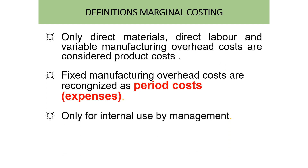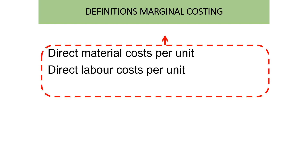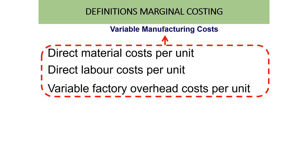Marginal costing is only for internal use by management. The items used to calculate total product cost under marginal costing include only variable manufacturing costs: direct material cost, direct labor, and variable factory overhead cost per unit.